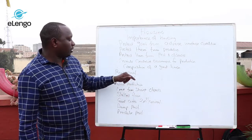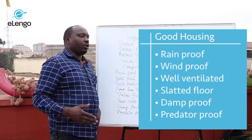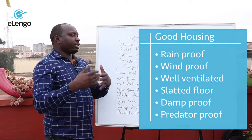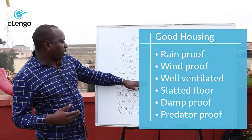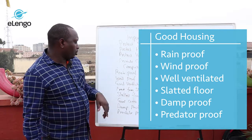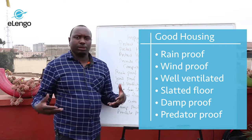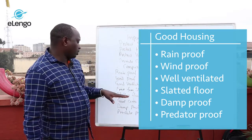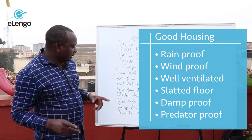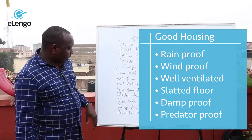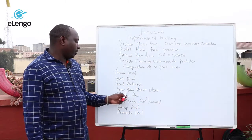So the house should be wind-proof — all the sides should have material that will not allow wind to pass through. Another factor is good ventilation: air should be able to move in and out of the house, and temperatures should circulate within the house. Another thing that should be avoided is sharp objects.